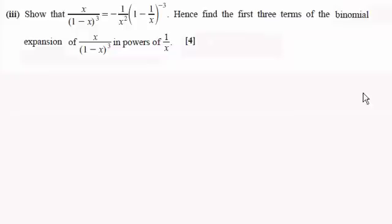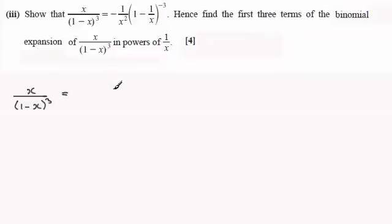So the first part of this is quite tricky actually. We take our fraction x over (1 minus x) all cubed, and we've got to show that it can be expressed as the given form. The method I came up with — I can see that we've got this x squared here, and that gave me the hint to create that term by dividing the top by x cubed, which will give me 1 over x squared.